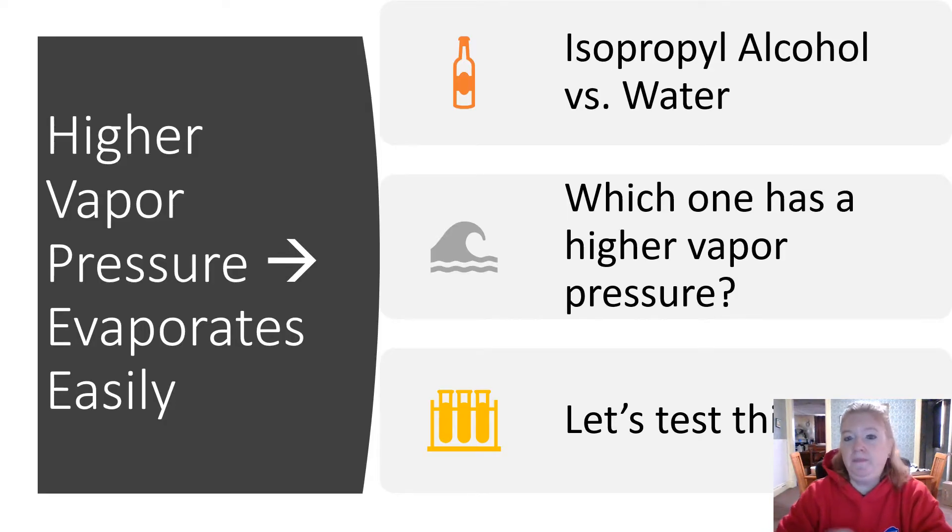Isopropyl alcohol versus water - which one has a higher vapor pressure? We'll test this in class. We'll take a drop of water and a drop of isopropyl alcohol, put them on our desk, and see which evaporates first. The one that evaporates first has lower intermolecular forces. If it has stronger intermolecular forces, it will take longer to evaporate.